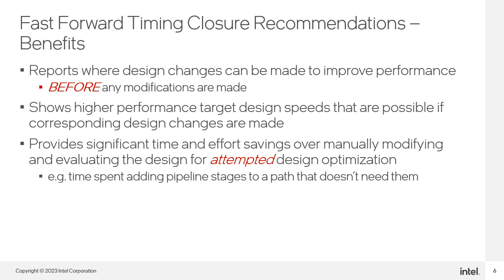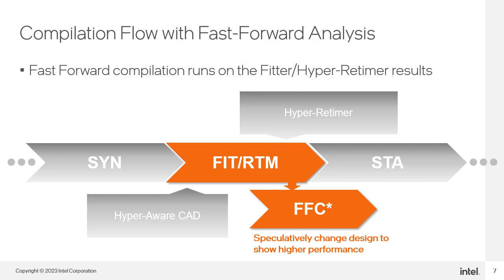All of this together translates into a significant time and effort savings over not using Fast Forward Compile. This slide shows how Fast Forward Compile fits into the Quartus Prime software flow. The center horizontal bar represents the standard FPGA compile flow showing synthesis, fitting, and timing analysis. Included with the fitting in this flow are the additional software features to support the HyperFlex architecture such as the HyperRetimer and HyperAware CAD. Fast Forward is a separate analysis tool that runs on a copy of the fitter netlist after retiming is finished. By making a copy of the netlist, Fast Forward can make all the changes at once without interfering with the results of the standard compilation flow.